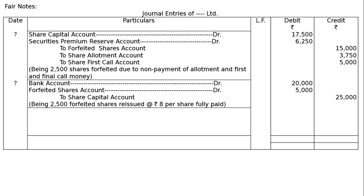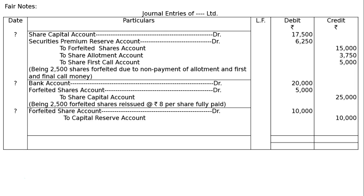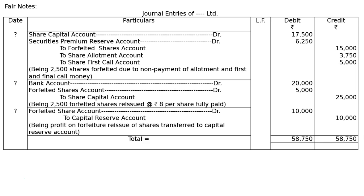Third entry — Transfer to Capital Reserve: Share Forfeiture Account debited to Capital Reserve Account. Forfeited amount was Rs. 15000; discount given on reissue was Rs. 5000; therefore Rs. 10000 is transferred to Capital Reserve. Narration: Being profit on forfeiture and reissue of shares transferred to Capital Reserve. Total debit and credit columns: Rs. 58750. This is the final answer.